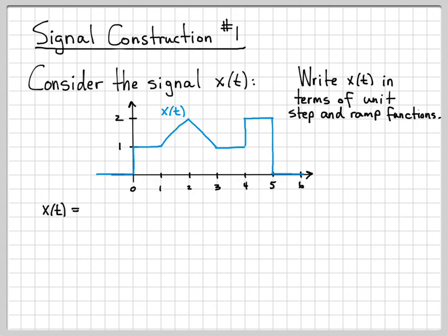I would like to be able to write an equation x(t) equals, and then the goal of this problem is to fill in what goes here. The way that we're going to do this is basically starting here on the left side of the axis, we're going to walk towards the right. And each time the signal changes, we're going to think about what do I need to write down in my equation to account for that change.